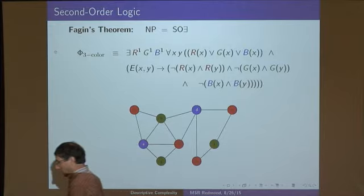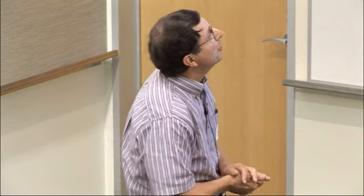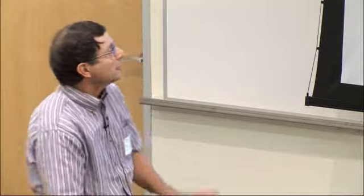Second-order is much stronger than first-order. Three-colorability is NP-complete, and this formula is second-order existential — all second-order quantifiers are out front and all existential. Ron Fagin noticed this in his PhD thesis and proved that NP has a very nice, elegant, machine-independent logical characterization: the NP properties are exactly the second-order existential properties. Every second-order existential property is in NP; every NP property is second-order existential. Exact characterization.